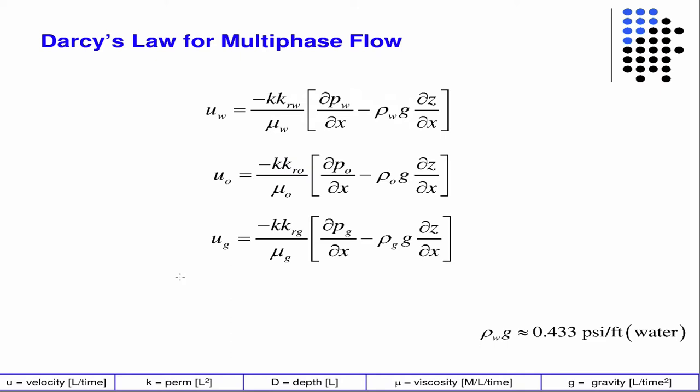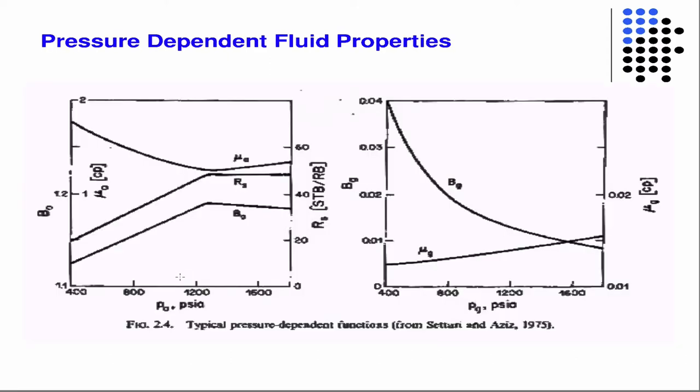So the problem is, when you look at this right away, it looks like we introduced even more unknowns because the relative permeabilities, until we introduce a constitutive model, they're also unknown, right? And now we have pressures also.